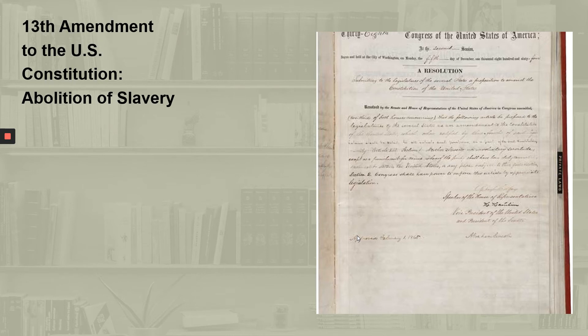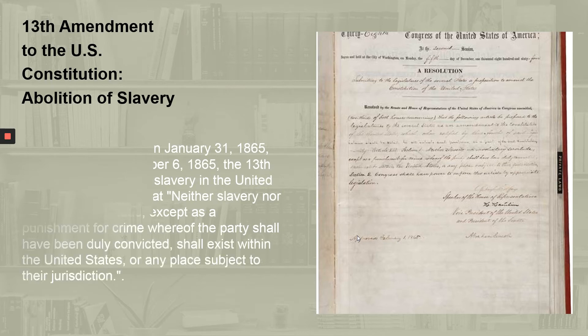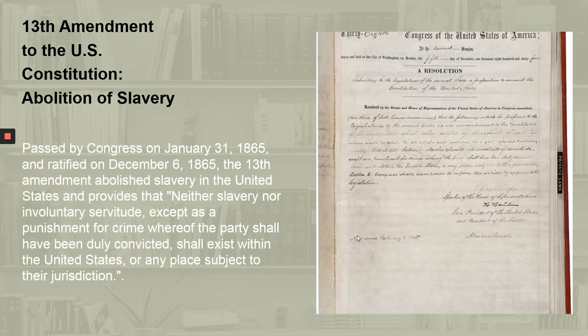Then we have the Thirteenth Amendment to the U.S. Constitution — the abolition of slavery. Passed by Congress on January 31, 1865, and ratified on December 6 of the same year, the Thirteenth Amendment abolished slavery in the United States and provides that neither slavery nor involuntary servitude, except as punishment for crime whereof the party shall have been legally convicted, shall exist within the United States or any place subject to their jurisdiction.